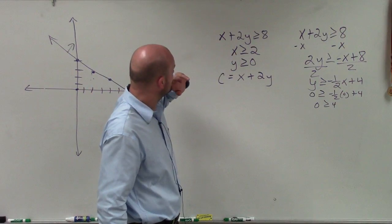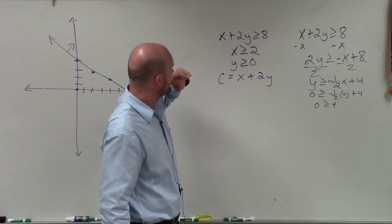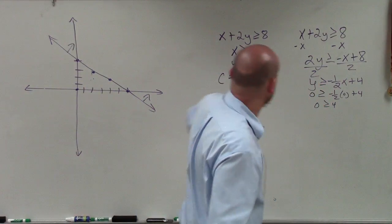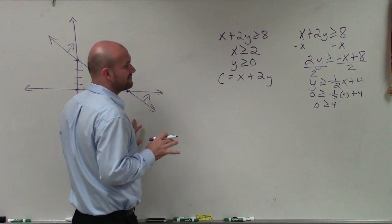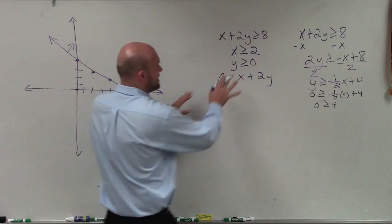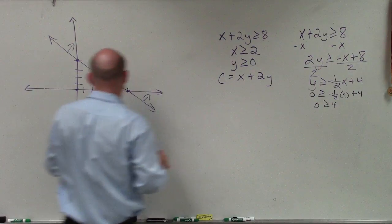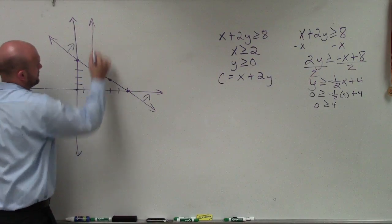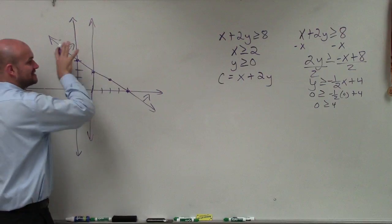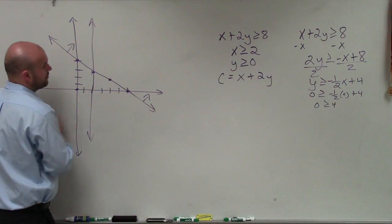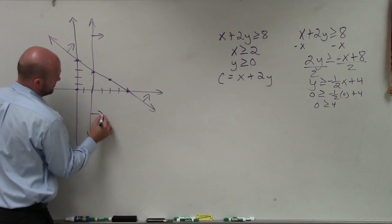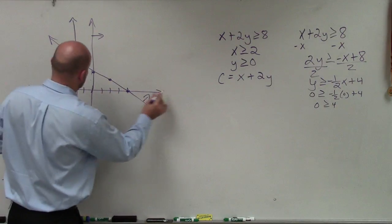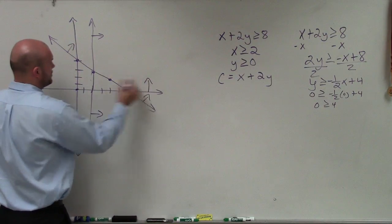My next constraint is x greater than or equal to 2. I'm going to go over to 2 and graph that vertical line. Since x is greater than 2, that's going to be all the values going to the right — those are in the feasible region. The last constraint is y greater than 0, which corresponds to the y-axis, and values greater than 0 go upward.